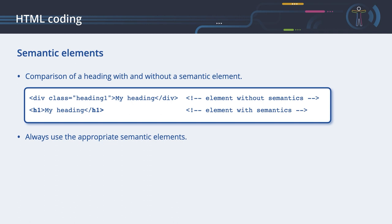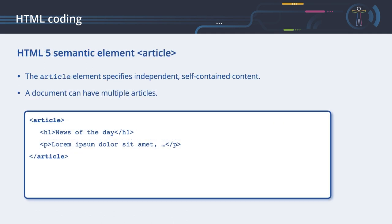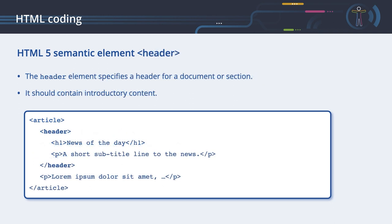The HTML5 standard added additional semantic elements. The article element specifies independent self-contained content. It can be used to group content, and a document can have multiple articles — for example, a blog that shows the text of each article one after another. Semantic elements can be nested; for example, a header inside an article. The header element specifies a header for a document or section and should contain introductory content.